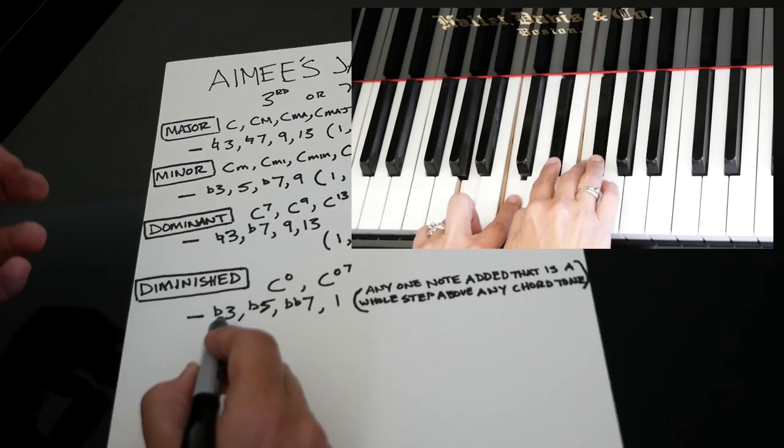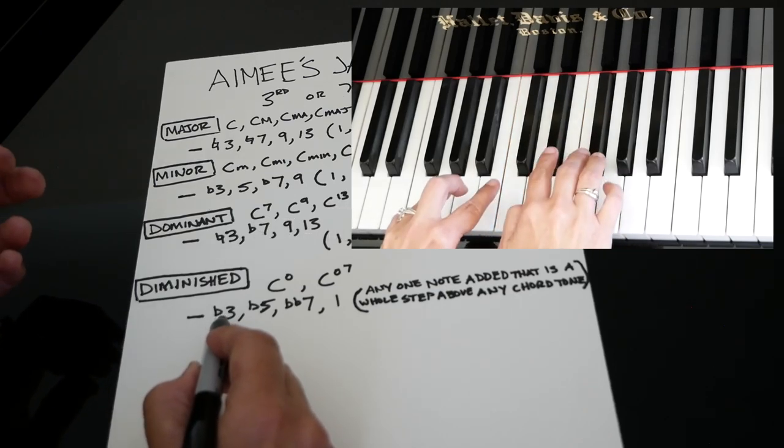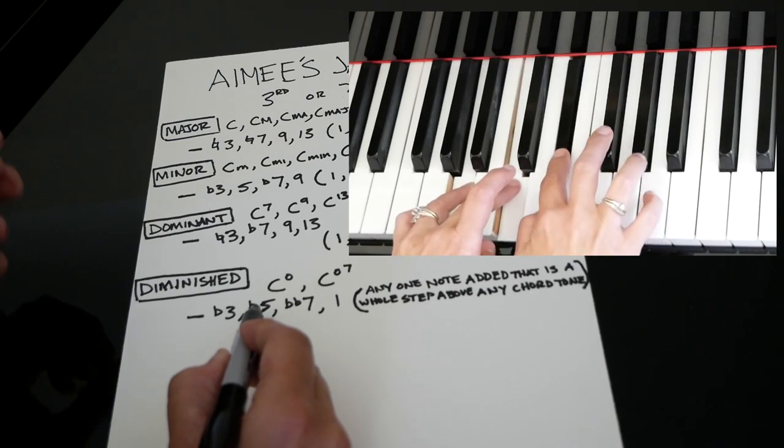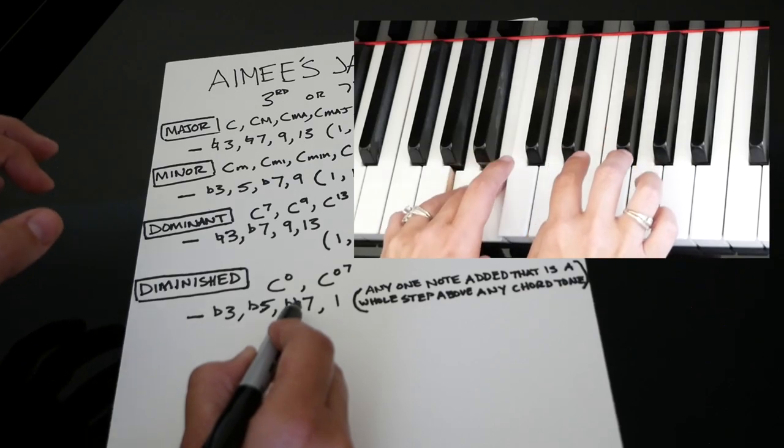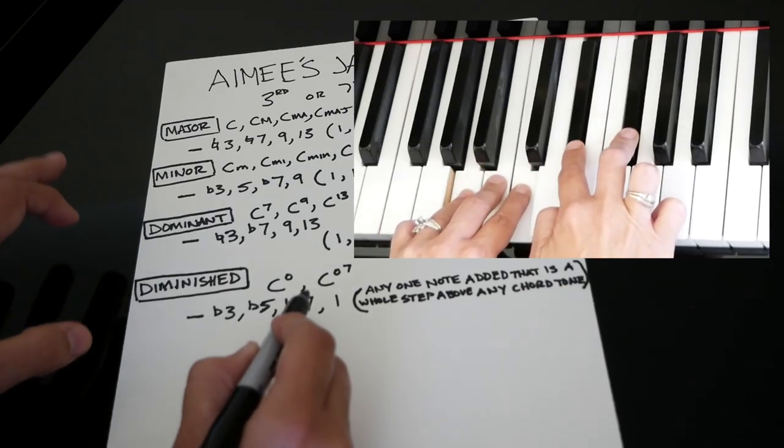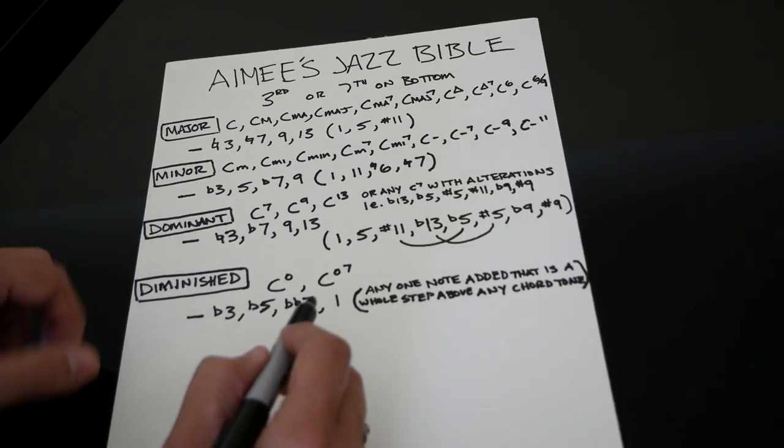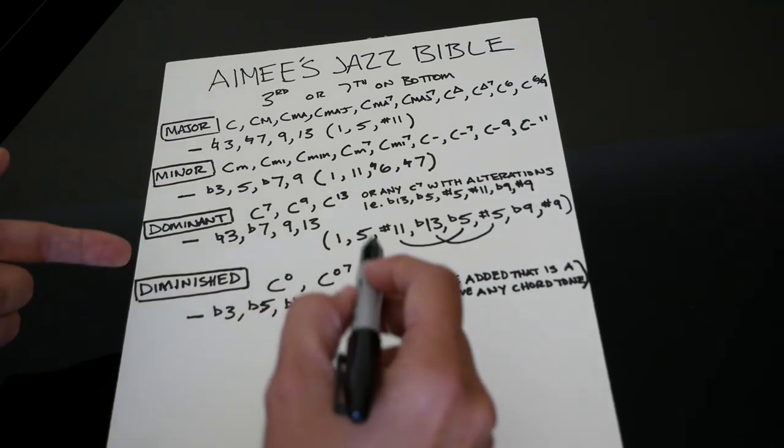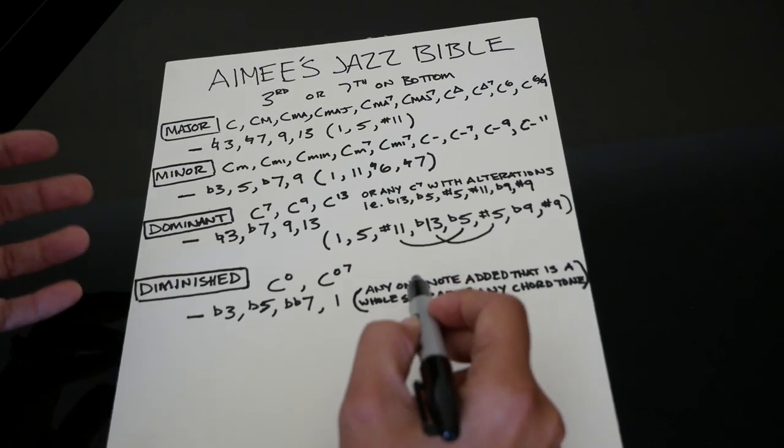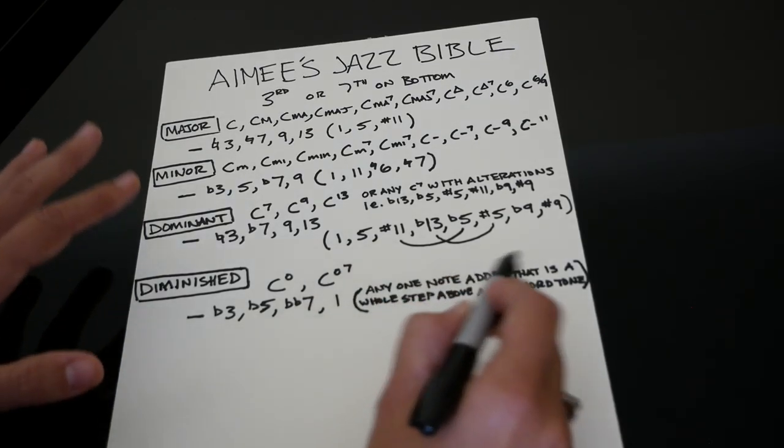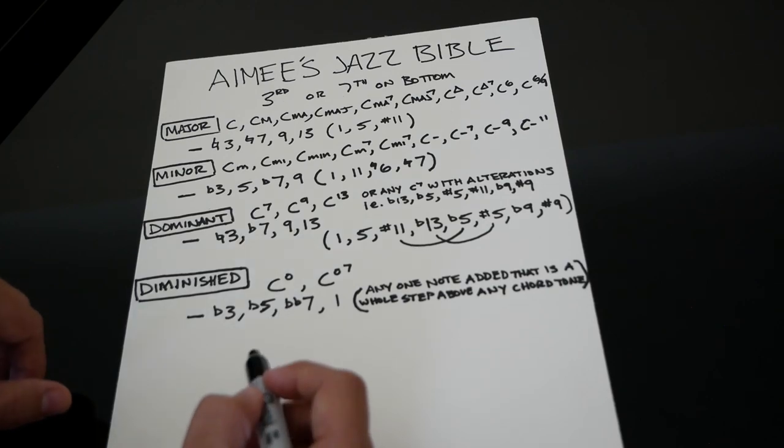We can do the same thing with any one of these chord tones. We can add an F because it's a whole step above this, or we can add an A flat because it's a whole step above this, or we can add a B because it's a whole step above this. So four notes plus one - that's my diminished rule, and it's really tasty. You don't need to do it. This is plenty most of the time, but if you want to make your chord totally extra tasty, add the whole step above. It's a really good trick.